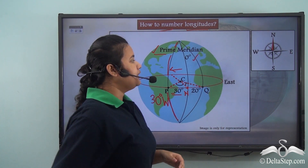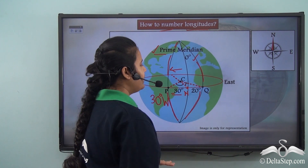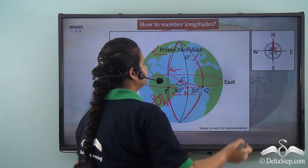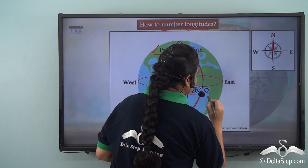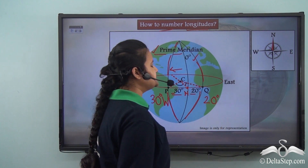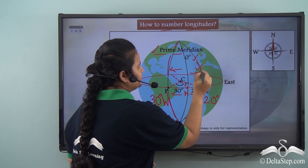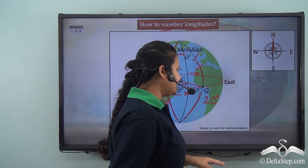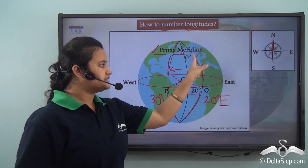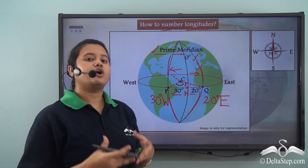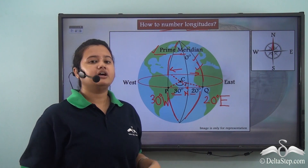Now, what about this line? The angular distance between this line passing through Q is 20 degrees from the prime meridian. So the number we can assign to this longitude is 20 degrees. As we can see from the picture, this longitude lies to the east of the prime meridian, so we will add a suffix E after this number. So this longitude will be marked as 20 degrees East. This is the way we number the longitudes.